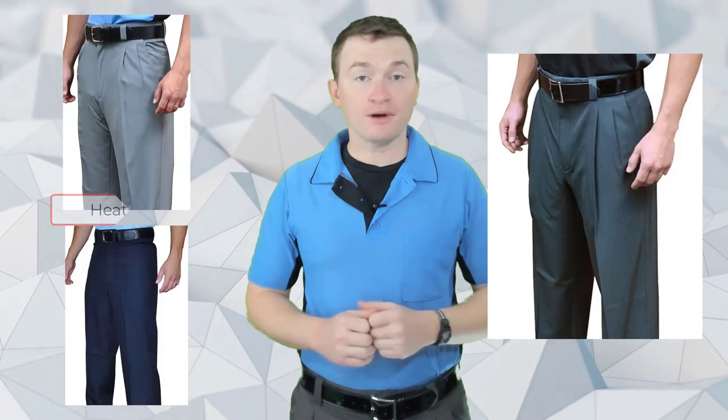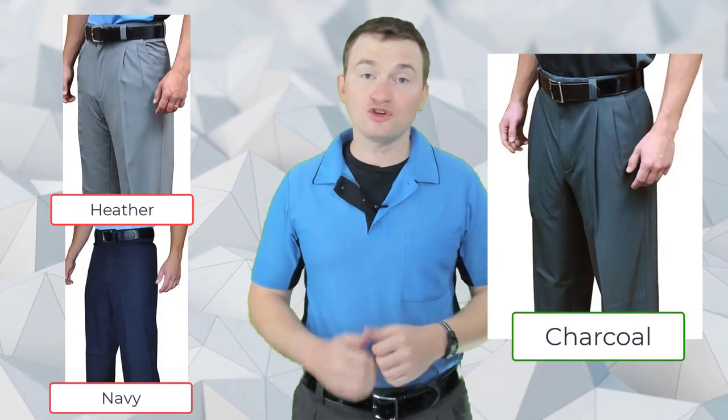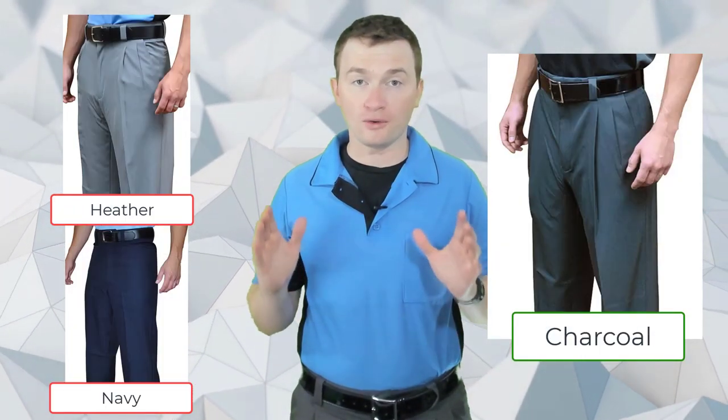You should know that pants are sold only by waist size, so you're going to need to get them hemmed regardless. They're sold in various colors but for working baseball games you should only be wearing charcoal pants. Now let's quickly talk about belts. Don't wear a dress belt from your closet. You should wear a black leather belt that is either an inch and a half or an inch and three quarters with a silver belt buckle.